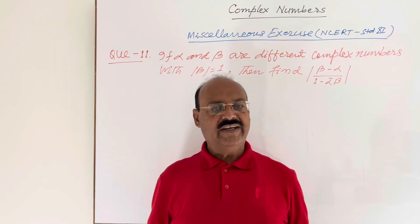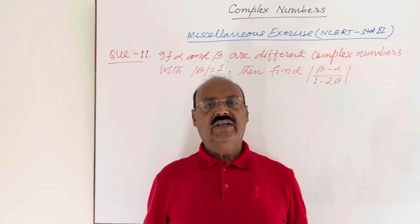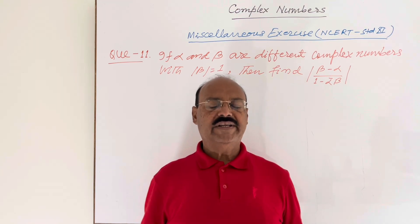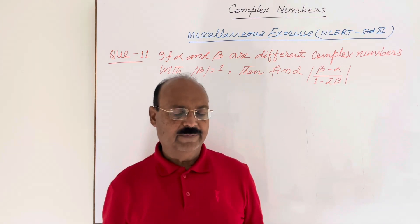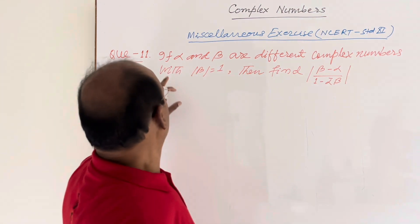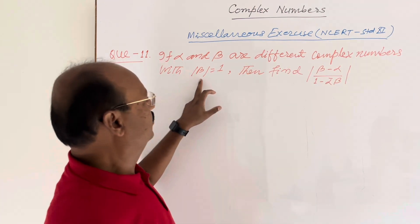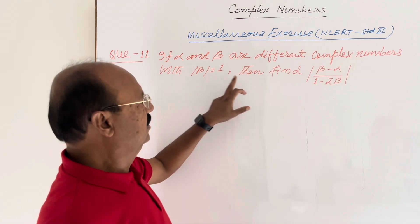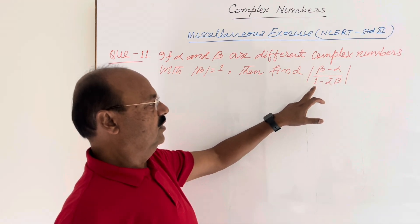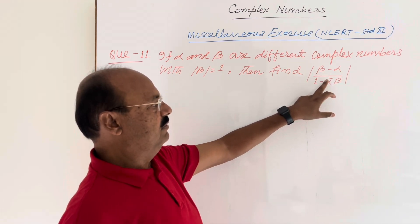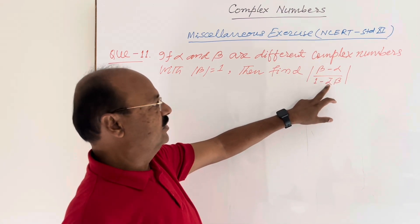Welcome students. Let us see a very important question from the chapter complex numbers. The question has been taken from the miscellaneous exercise of the NCERT book of standard 11. If alpha and beta are different complex numbers with modulus of beta equal to 1, then find the modulus of beta minus alpha upon 1 minus alpha-bar into beta. Alpha-bar means the conjugate of alpha.